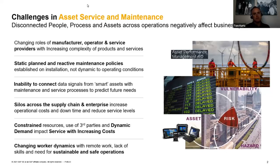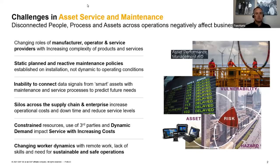This first slide really gets at the challenges and opportunities we're seeing in the market today. When you think of the stakeholders in asset management, you have manufacturers, operators of equipment, and service providers — and those roles are blending. You have manufacturers who want to act as service providers, and manufacturers looking at incremental business models like product-as-a-service, where instead of selling a product to an operator, they sell a subscription and operate the equipment themselves. So the world is blending and the need to deal with increasingly complex products and services is there.